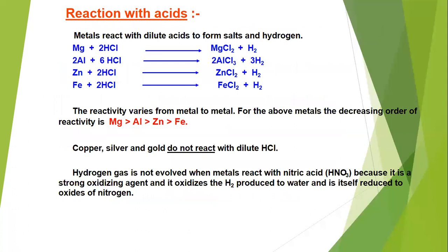Next is the reaction of different metals with acid — particularly dilute acids. We will talk about hydrochloric acid and sulfuric acid. Consider these four metals: magnesium, aluminium, zinc, and iron.